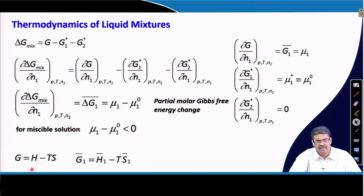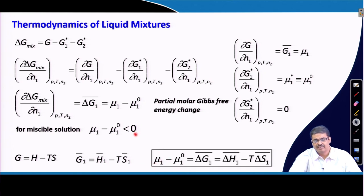We also know that G is given by H minus TS, where H is enthalpy and S is entropy. So the partial quantities can also be expressed at constant temperature, and this term can be expressed in terms of partial molar Gibbs free energy change, partial molar enthalpy change, and partial molar entropy change of the solvent.